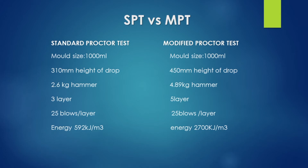What is the general procedure? We fill a 1,000 mL cylindrical mold. We add water and compact with a hammer using 25 blows. There are 3 layers for the standard method and 5 layers for the modified method. We fill layer by layer and apply the hammer.